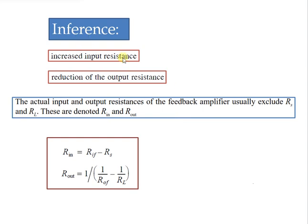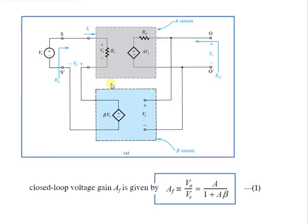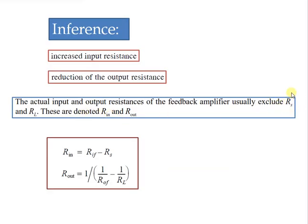Whenever we have a series connection we obtain an increased value of resistance, and whenever it is a shunt connection we obtain a decreased value of resistance. The series connection at the input gives an increased input resistance, and the shunt connection at the output gives a reduced output resistance. If source resistance RS and load resistance RL are specified, the actual input resistance = RIF − RS and the actual output resistance = 1 / (1/ROF − 1/RL).